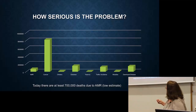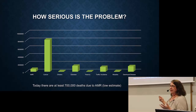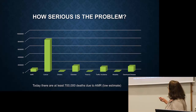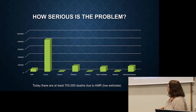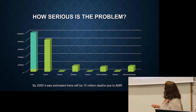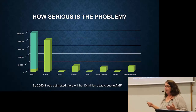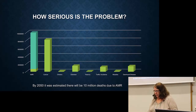You can compare that 700,000 figure to cancer, which is about 8 million deaths per year. A calculation projects that by the year 2050, if nothing is done, the number of deaths due to antimicrobial resistance will rise to 10 million per year. That is a very scary number.